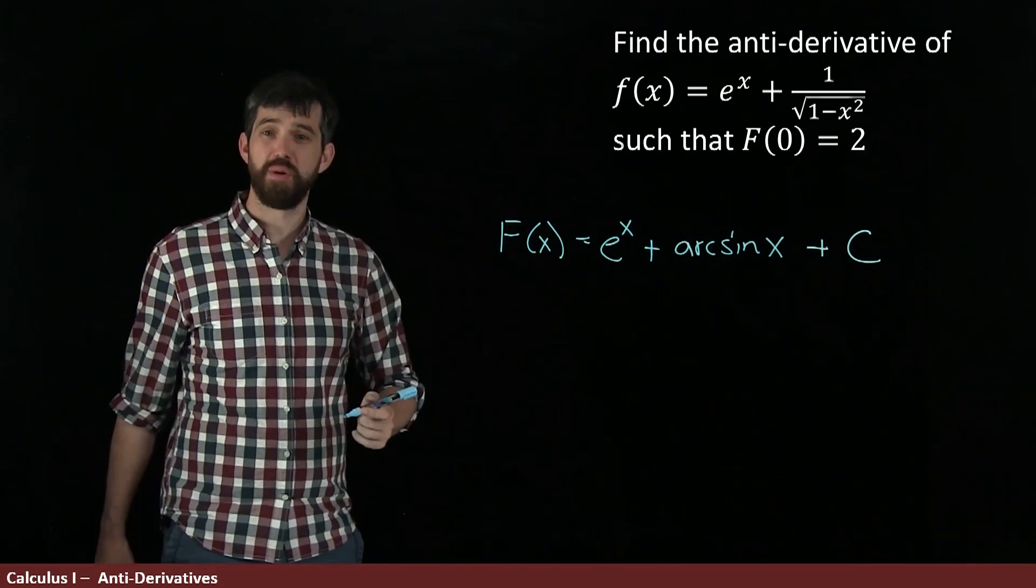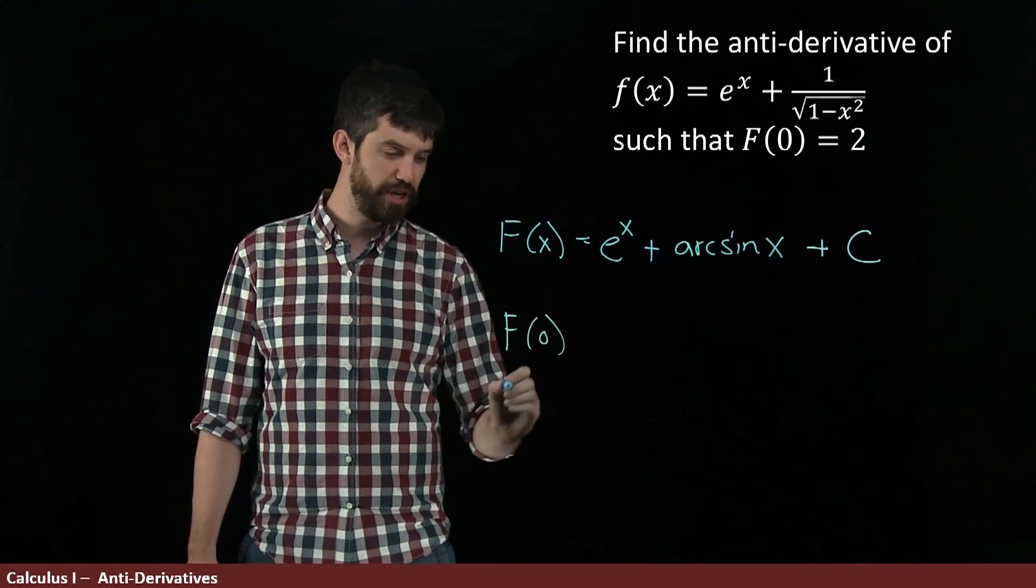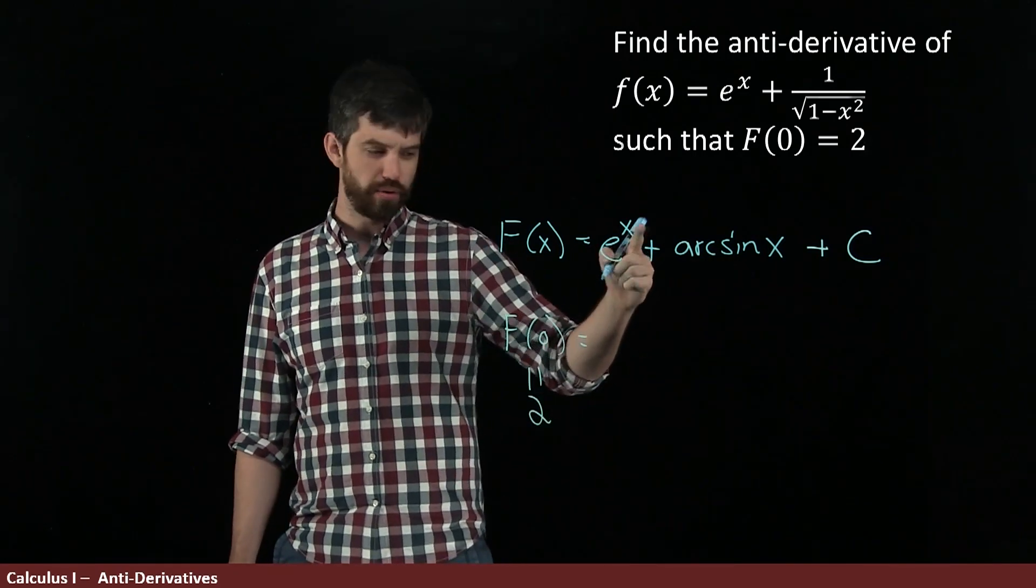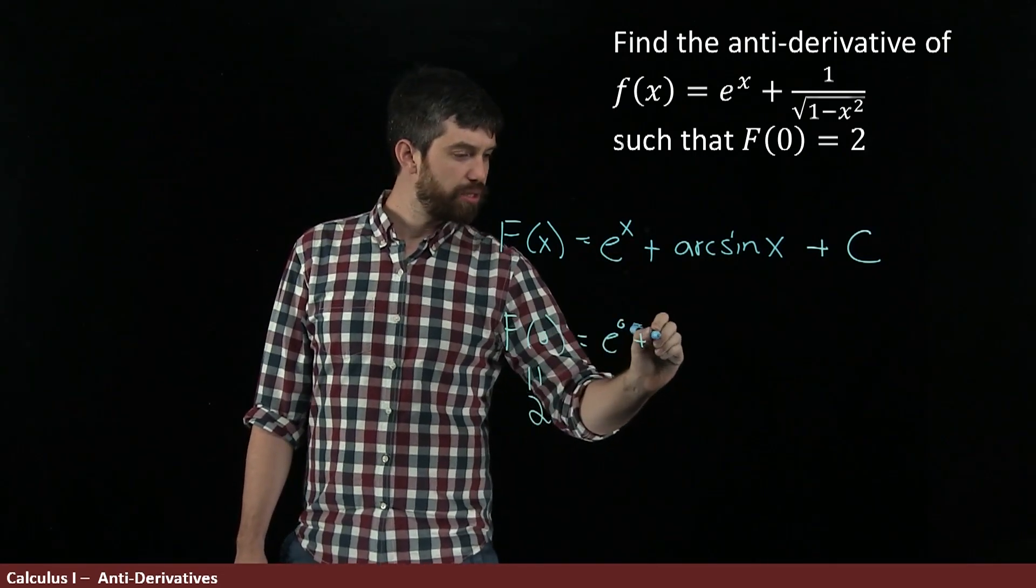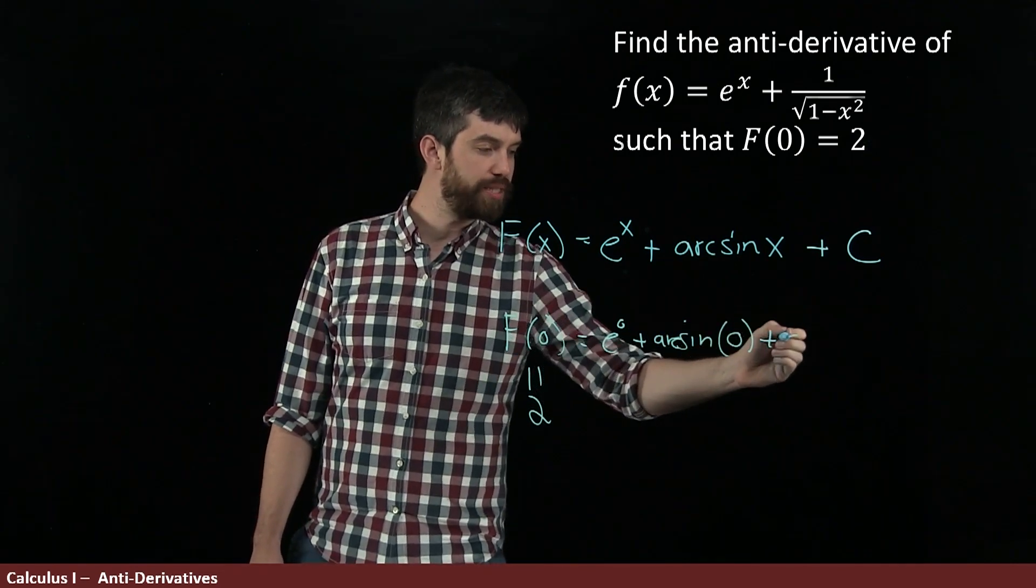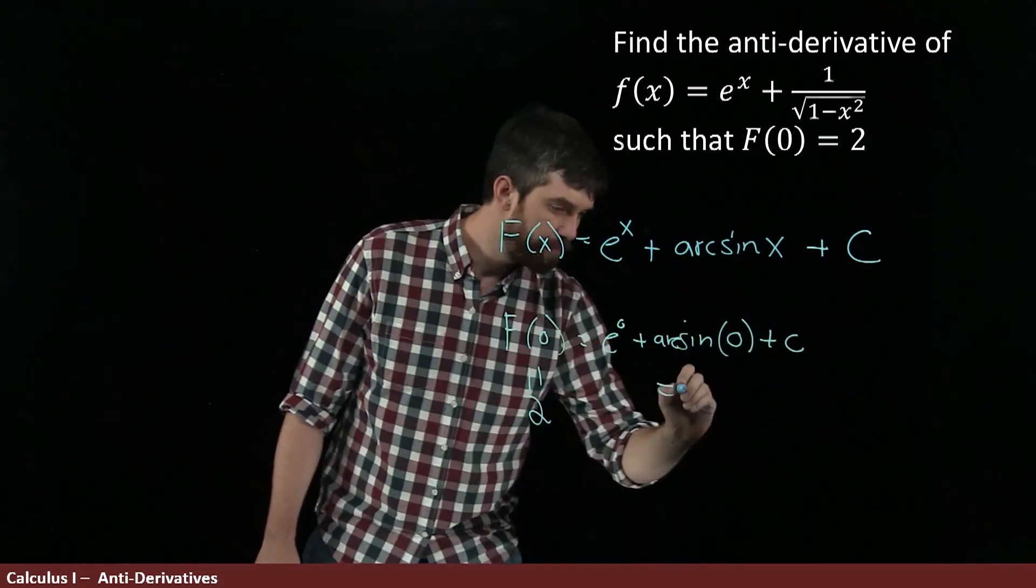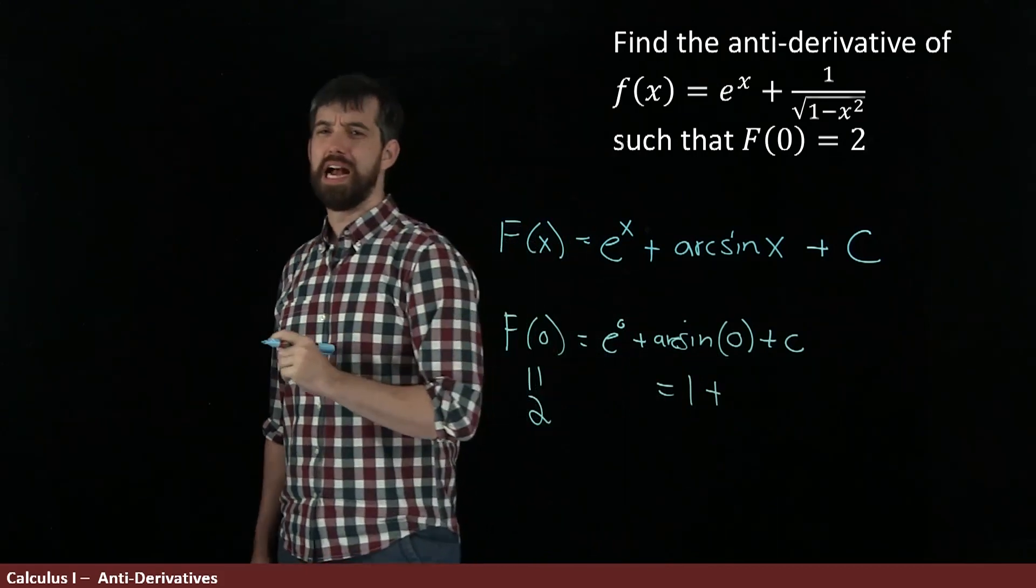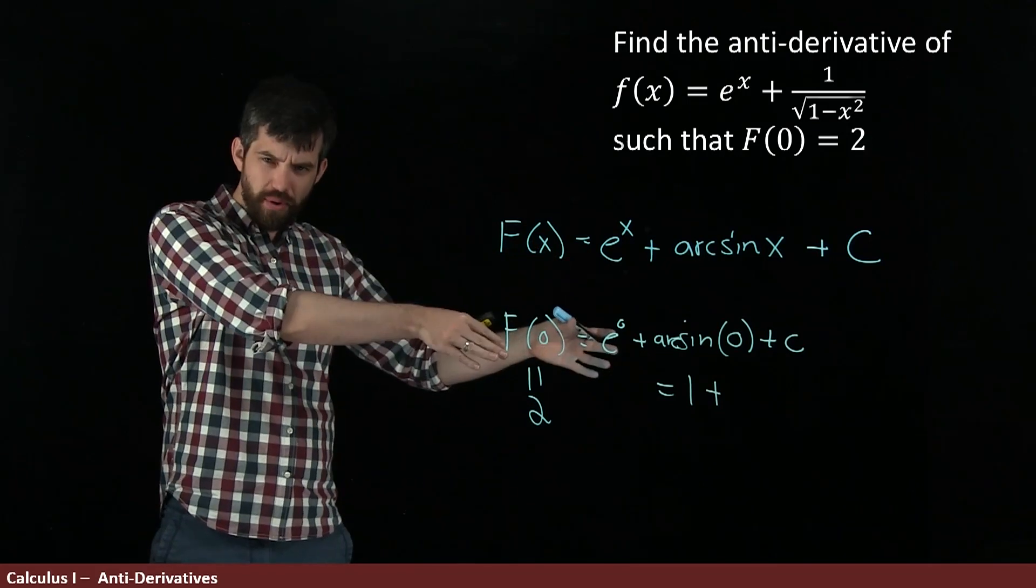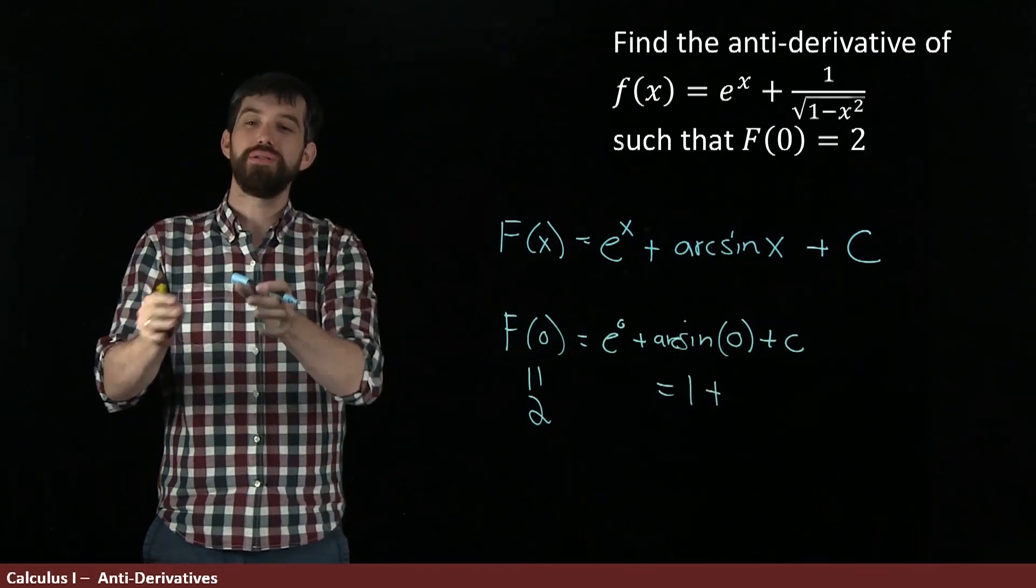So now it comes time to determine that. I want F(0) to be equal to the value of 2. That's my claim. But what is F(0)? Well, e^0 plus arcsine of 0 plus C. I can evaluate that. e^0 is just 1. What about arcsine of 0? Well, I know that sine of 0 is 0, so therefore arcsine of 0 is also going to be 0.